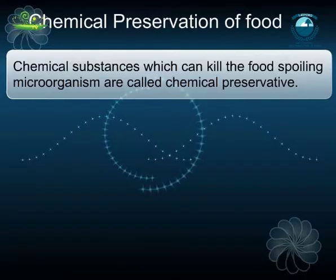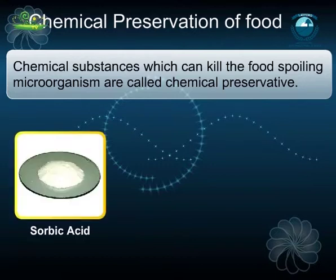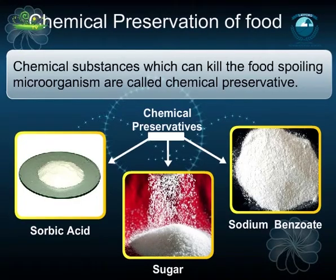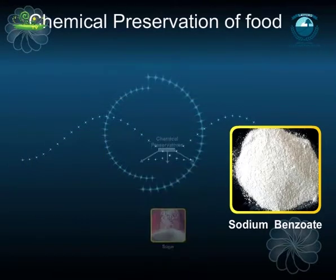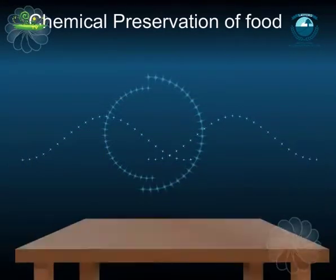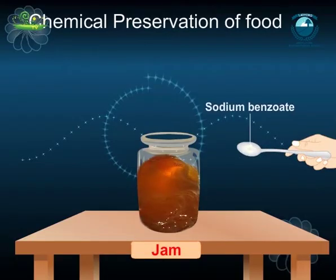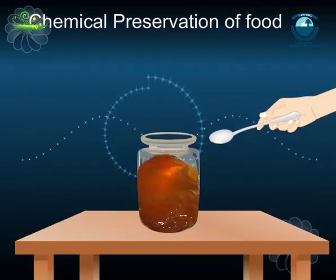Food can be preserved by adding certain chemical substances which can kill the food-spoiling microorganism. This method is called chemical preservation, and the chemicals used to check the growth of microorganisms are called preservatives. Sodium benzoate and sodium metabisulfite are used in jams and squashes to check their spoilage.